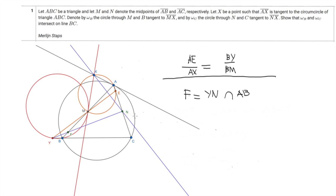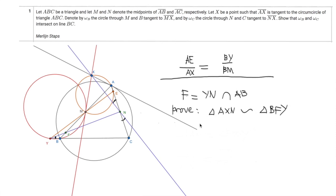What we are going to prove is that the circle YNC is tangent to line XM. To prove it, we are going to prove that triangle AXN is similar to triangle BFY. If this is true, then angle AXN equals angle NFY, which equals angle NYC. Remarking that this angle equals the angle on the other side, this implies XM is tangent to the circle YNC.